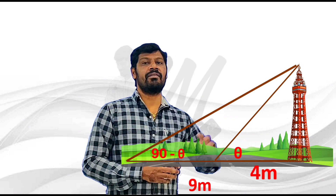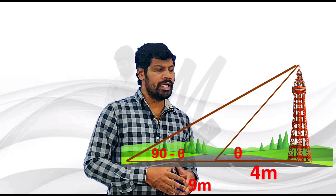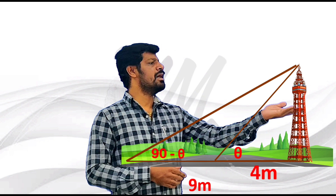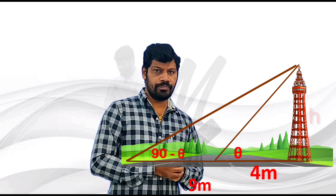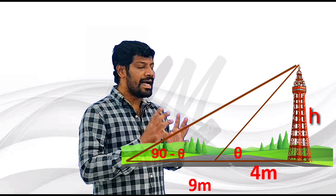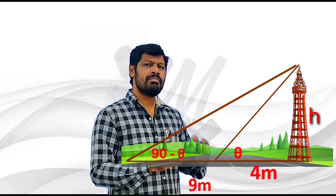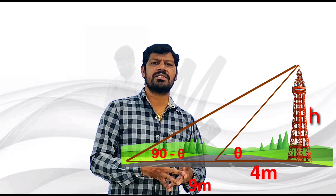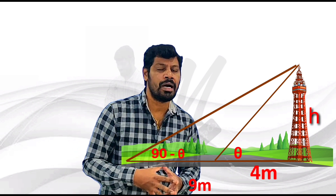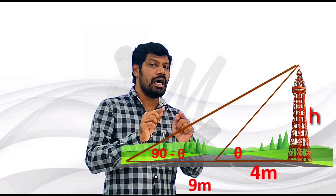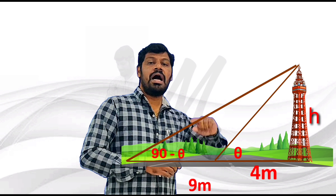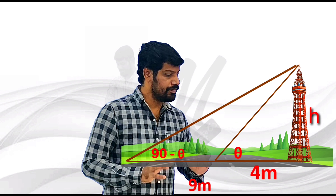We need to find the height of the tower. Looking at this diagram, we will see the first and second problem. The angles are clear: 30 degrees and 60 degrees here, but in this problem we use theta and 90 minus theta.